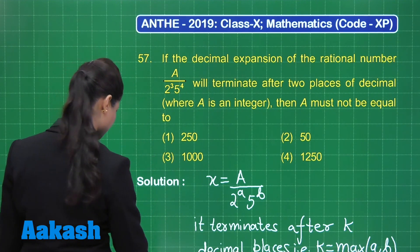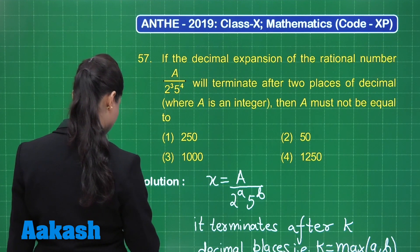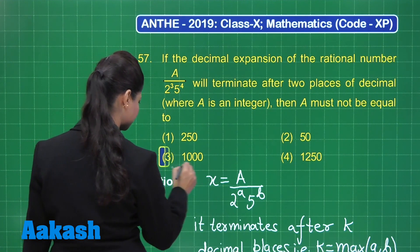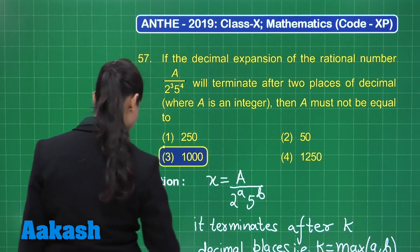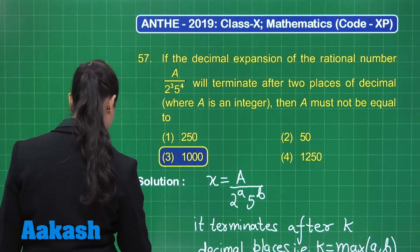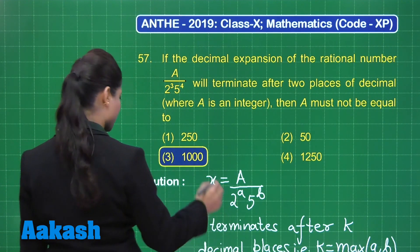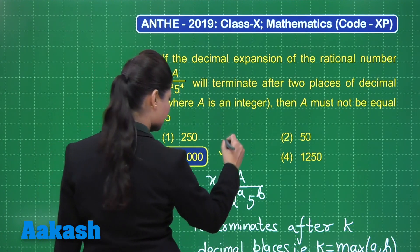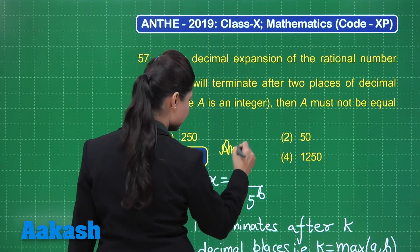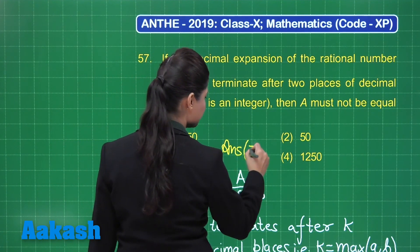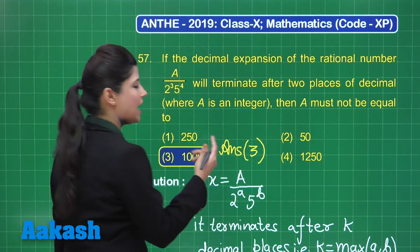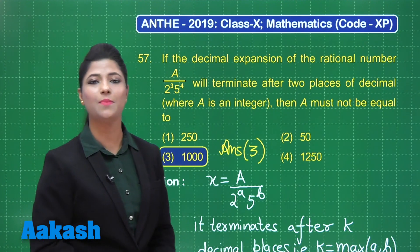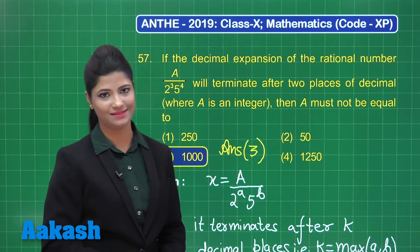The correct answer for this question is option number 3, that is 1000. You can definitely mark the answer as option 3. I hope that is clear. Now let's take up our next question.